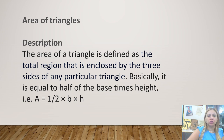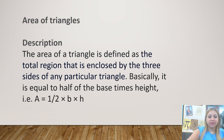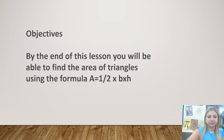We are going to learn about area of triangles. The area of a triangle is defined as the total region that is enclosed by three sides of any particular triangle. Basically, it is equal to half of the base times height. By the end of this lesson, you will be able to find the area of triangles using the formula: area equals half times base times height.